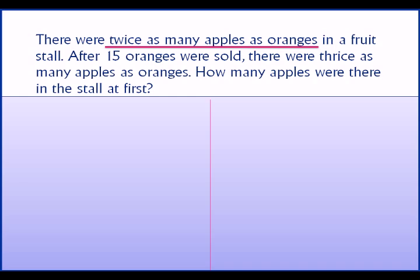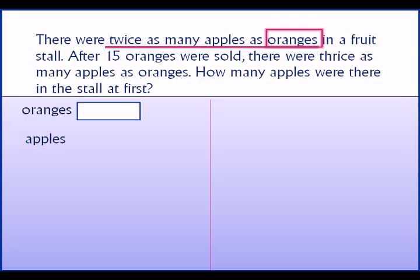Underline the keywords: 'twice as many as'. The quantity that comes after the comparison is oranges. So we draw the model for oranges at first — we draw one unit for oranges. Apples is twice, or two times, so apples will be two units.